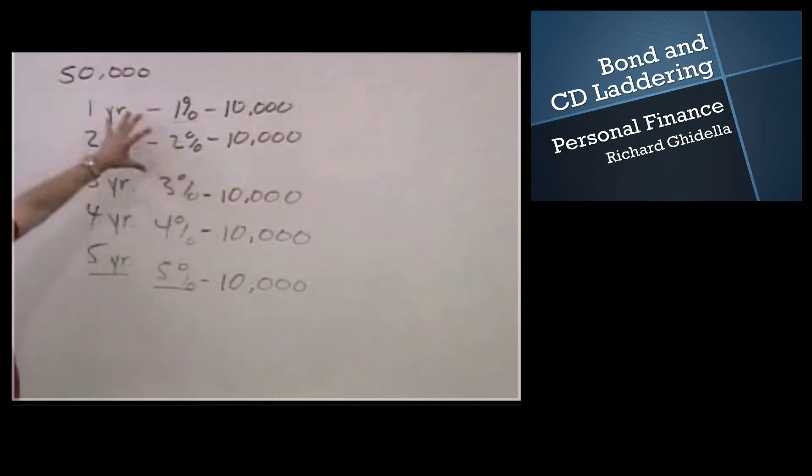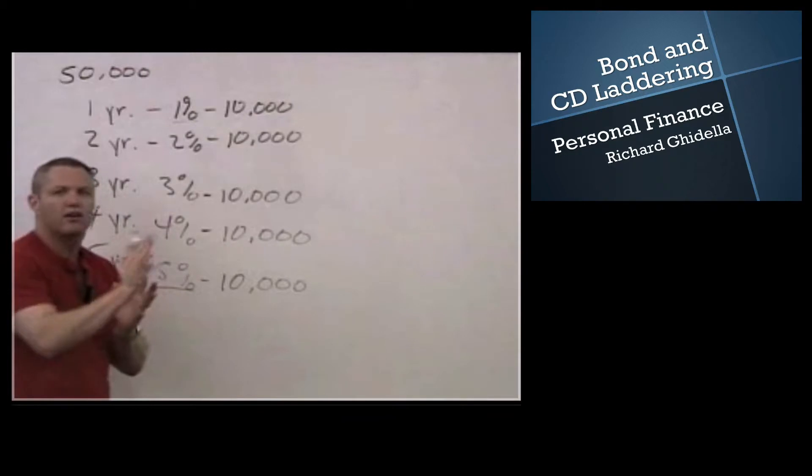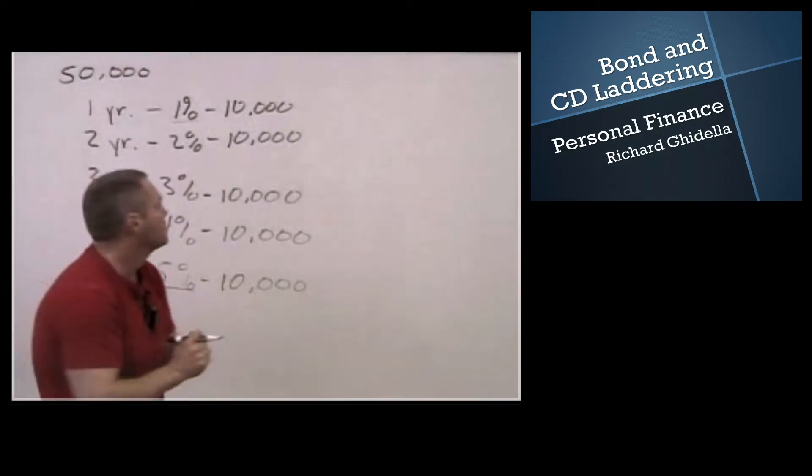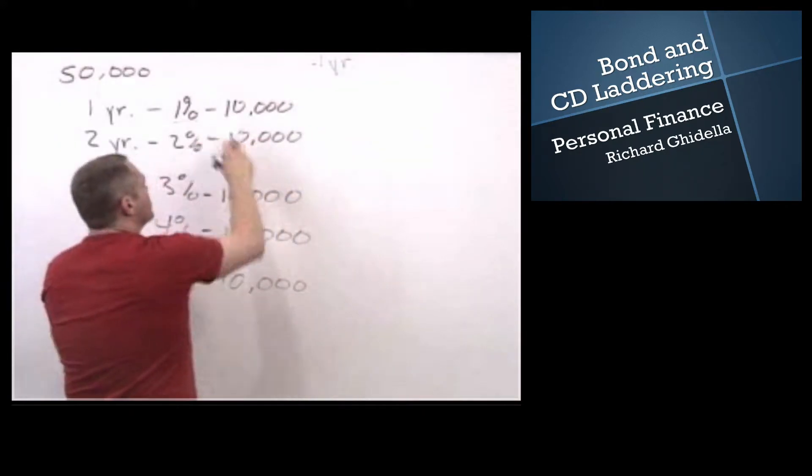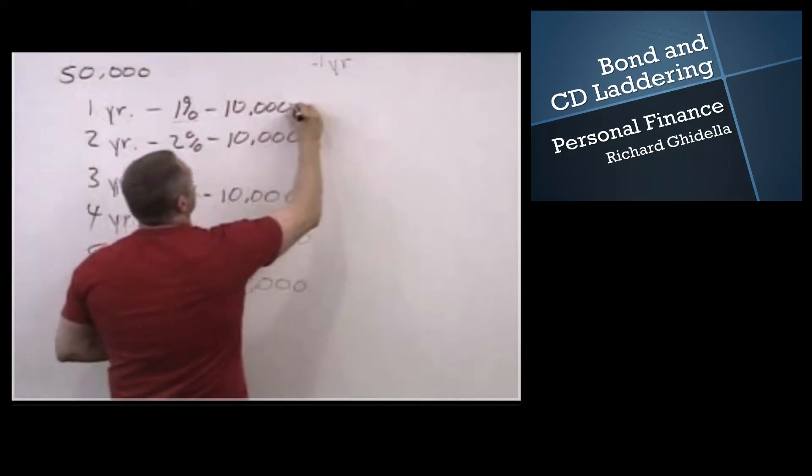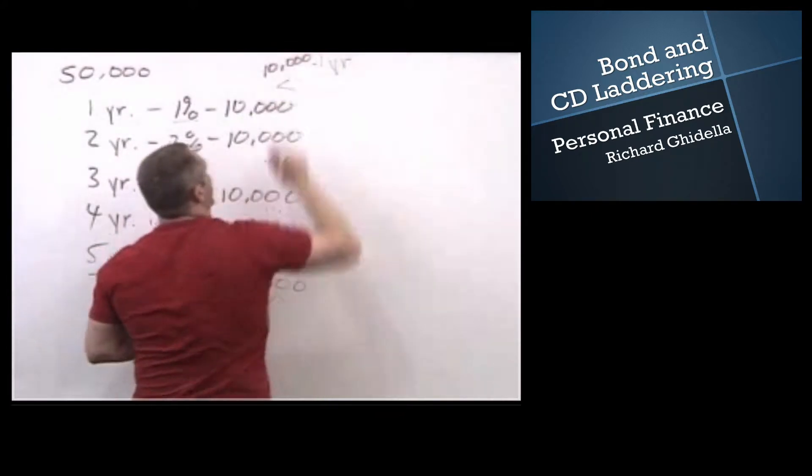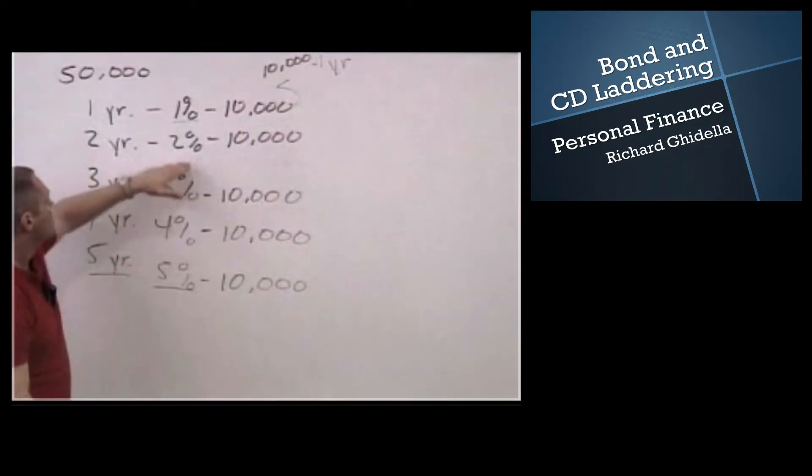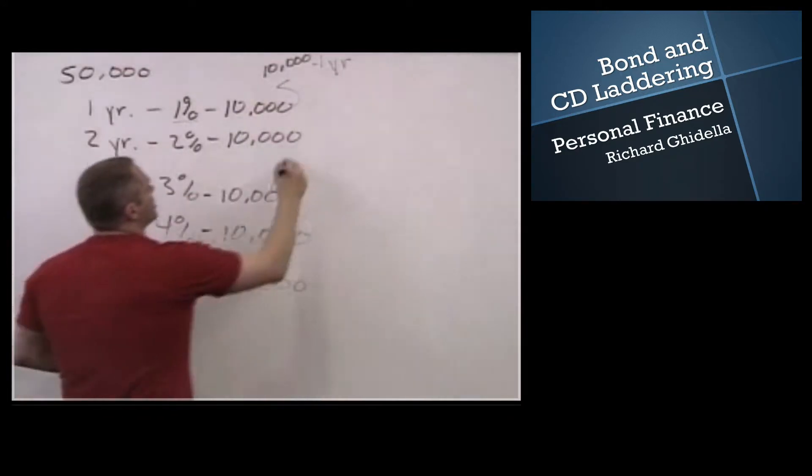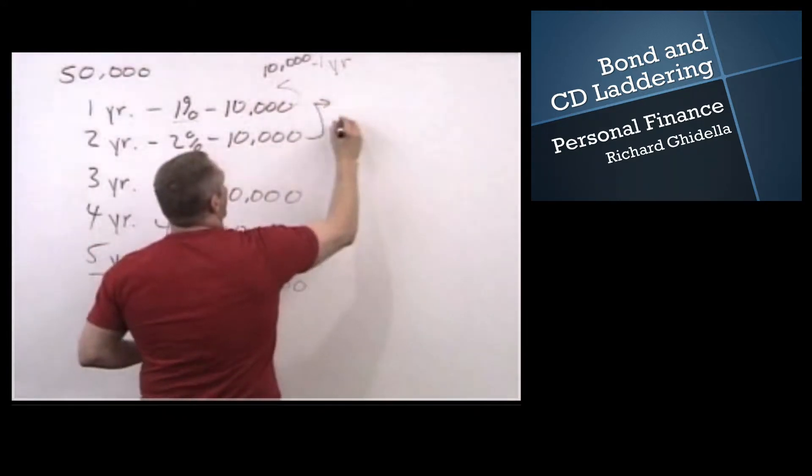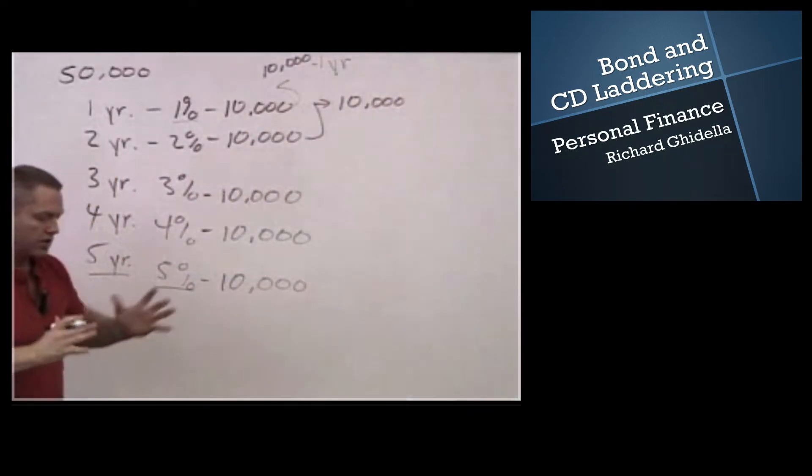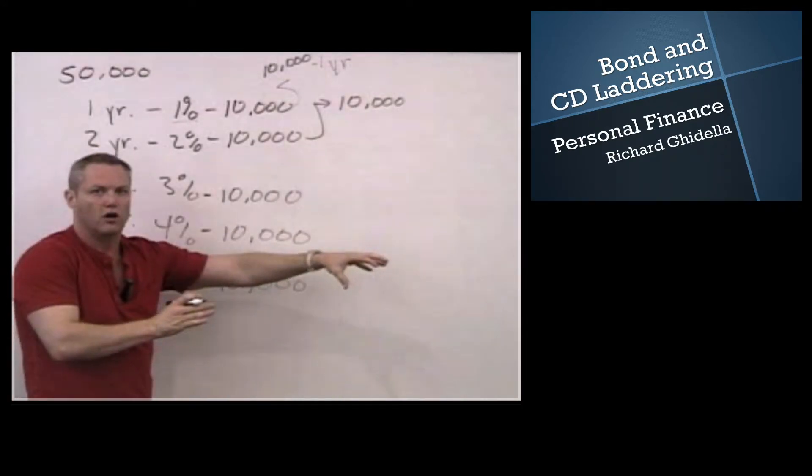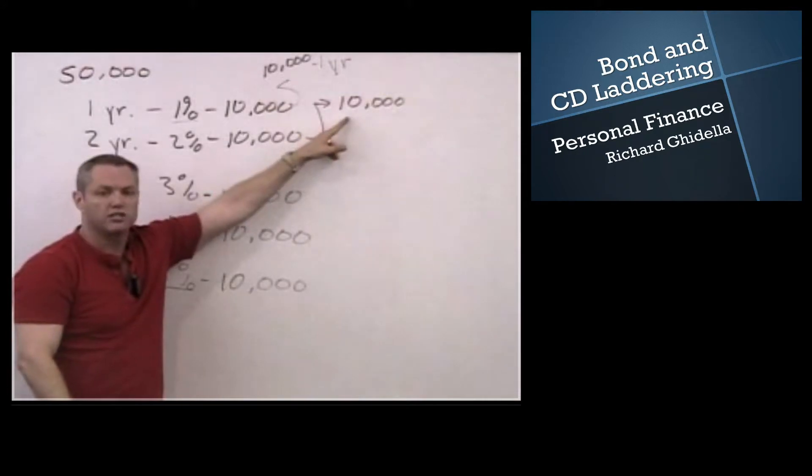But the true beauty of laddering comes about as the ladder ages over time. So one year from now, my one year CD comes due. So I have this $10,000 back in my pocket. My two year CD that is a year old acts the exact same way as a one year certificate. Because it's a two year certificate, it's one year old, it has one more year to go to maturity, so it's going to act the same as a one year certificate.